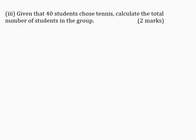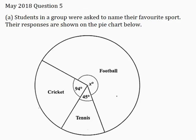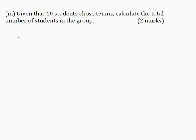Part 3: Given that 40 students chose tennis, calculate the total number of students in the group for two marks. Now in our pie chart here, we have for the sector that represents tennis, the angle is 45 degrees and this 45 degrees represents 40 students. So the total number of students is given by 360 degrees.